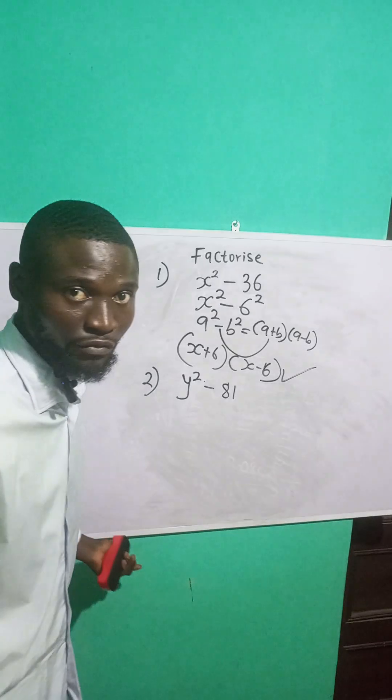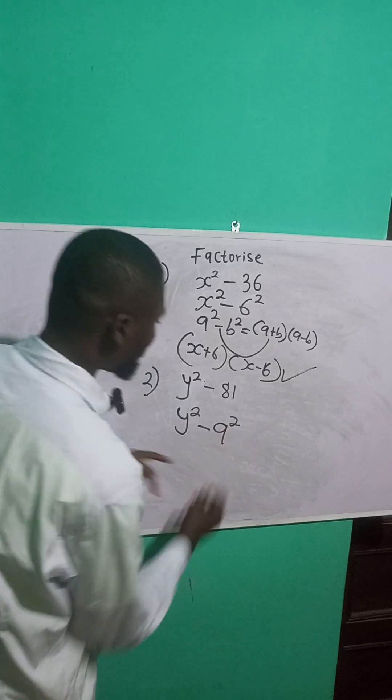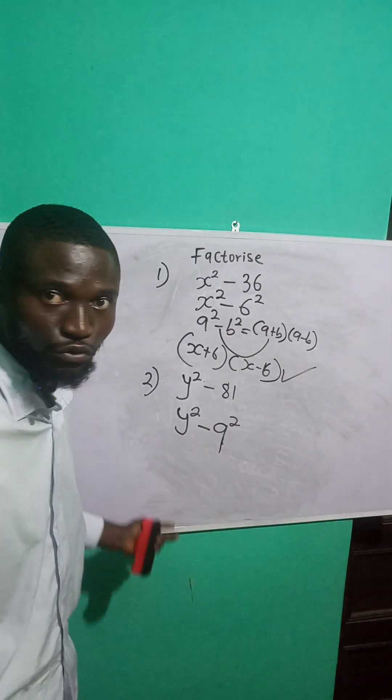Now, here, we can also apply difference of two squares to be what? Y square minus what? 9 square. Because 9 square will give you 81, right? If I apply difference of two squares here,